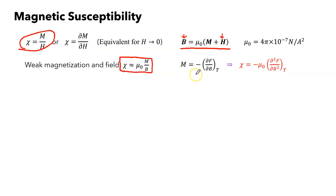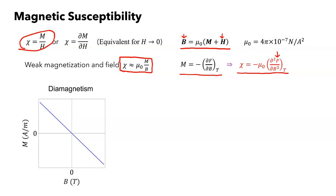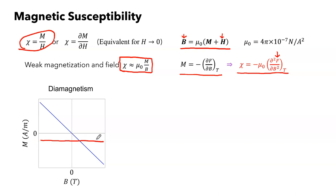What is important is that in order to calculate the susceptibility, we need to find the free energy as a function of the B field. Because the magnetization is the first order derivative, the susceptibility is the second order derivative of the free energy over the B field. In terms of the susceptibility, we can characterize the behavior of different magnetic materials. First of all, diamagnetism refers to the induced magnetization that opposes the increasing magnetic field. When you apply a B field to the system, you create a negative magnetization, so the reaction opposes the magnetic field. If you take the slope or derivative, then the susceptibility is a negative constant.